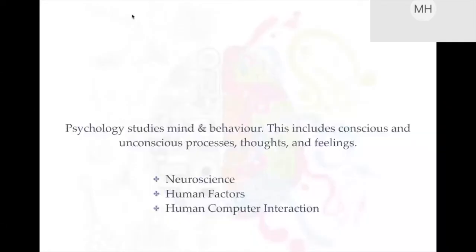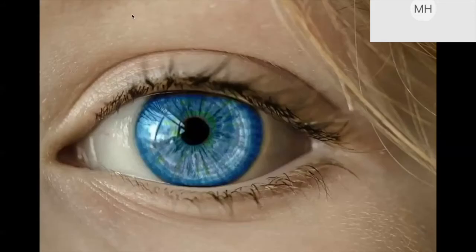This is a powerful example of how design decisions affect people's ability to interact with a system — and one of the examples that led me into human-computer interaction. Psychology is the study of mind and behavior, including conscious and unconscious processes, thoughts, and feelings. The visual system is really complex and intriguing. The eye is a lens, so the image produced is actually upside down — the brain does an amazing job computationally flipping it so everything appears in the right place.